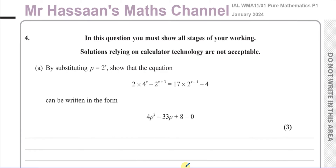This question is about indices and exponential equations. It says: by substituting p equals 2 to the power of x, show that the equation 2 times 4 to the power of x minus 2 to the power of x plus 3 equals 17 times 2 to the power of x minus 1 minus 4 can be written as 4p squared minus 33p plus 8 equals 0.